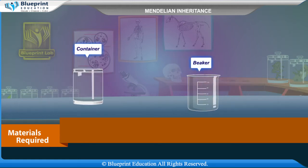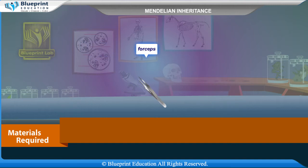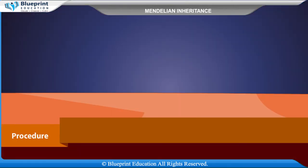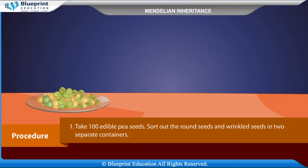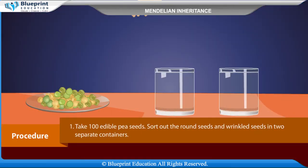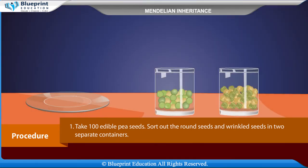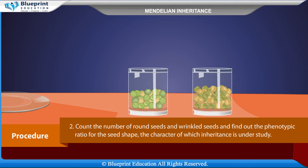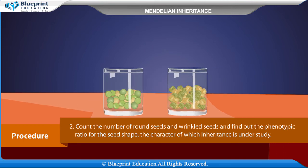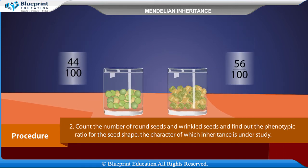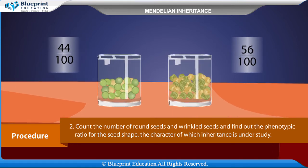Container or beaker and forceps. Procedure: Take 100 edible pea seeds, sort out the round seeds and wrinkled seeds in two separate containers. Count the number of round seeds and wrinkled seeds and find out the phenotypic ratio for the seed shape, the character of which inheritance is under study.